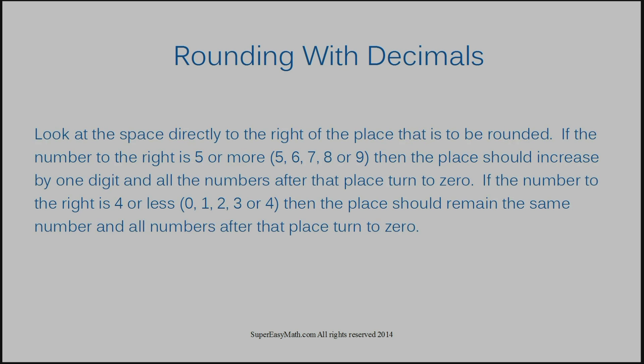When rounding with decimals, you need to make sure that you look at the space directly to the right of the place that is to be rounded. If the number to the right is 5 or more — meaning 5, 6, 7, 8, or 9 — then the place should increase by one digit and all the other numbers after that place turn to 0.